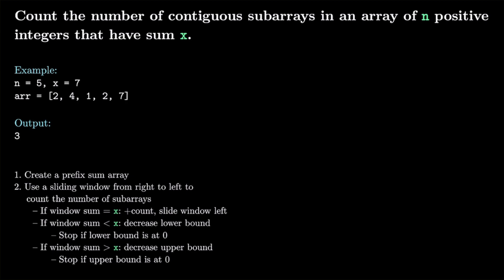This algorithm works because we have an array of n positive integers — the key constraint is positive integers. When we create our prefix sum array from positive integers, we end up with a sorted array, since each addition only increases the running total. If we added negative integers this would break down, so this algorithm is specific to positive integers, though it can be adapted for negatives as well.